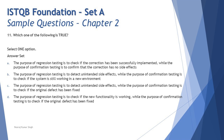Option B: the purpose of regression testing is to detect unintended side effects, while the purpose of confirmation testing is to check if the system is still working in a new environment. The second part is wrong — checking behavior in a new environment relates to migration, and when migrating environments you typically perform regression testing again. That has nothing to do with confirmation testing. The first part is correct, but the second part disqualifies this option.